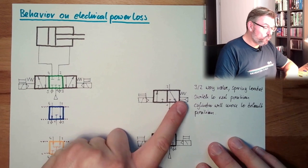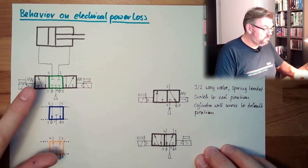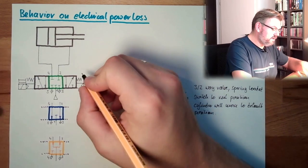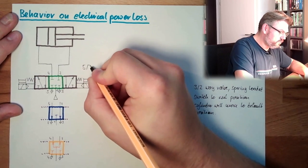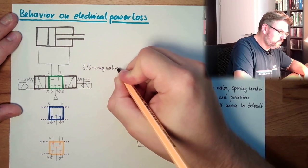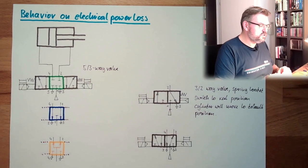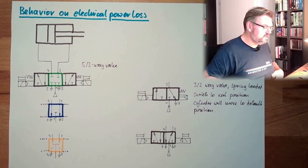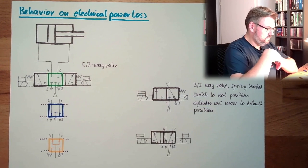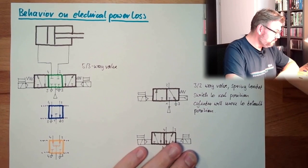Also spring-loaded, and therefore with the default position, might be a 5-3 way valve. So here we have the 5-3 way valves here, 5-3 way valve. And they are centered by the springs. So the default position, if we have power outage, the default position will be this middle position. Middle position will be the default position.